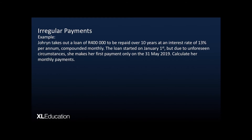Jorin takes out a loan of 400,000 rand to be repaid over 10 years at an interest rate of 13% per annum compounded monthly. The loan started on January 1, but due to unforeseen circumstances, she makes her first payment only on the 31st of May 2019. We need to calculate her monthly payments. Importantly, the bank won't give her extra time — she still needs to finish paying off the loan 10 years after she received the amount.